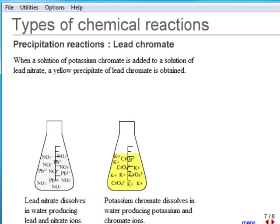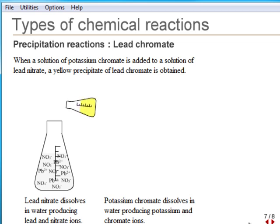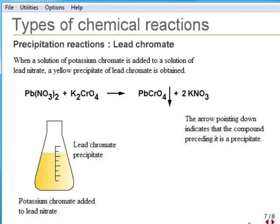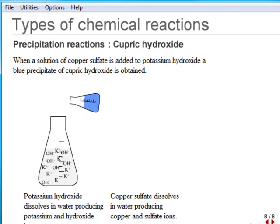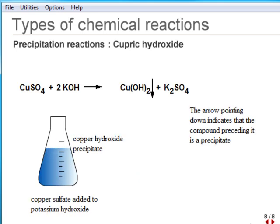All nitrates are soluble, and all potassium salts are soluble, but lead chromate is insoluble. All potassium salts are soluble, and copper sulfate dissolves to form a blue solution. Copper hydroxide is, however, insoluble.